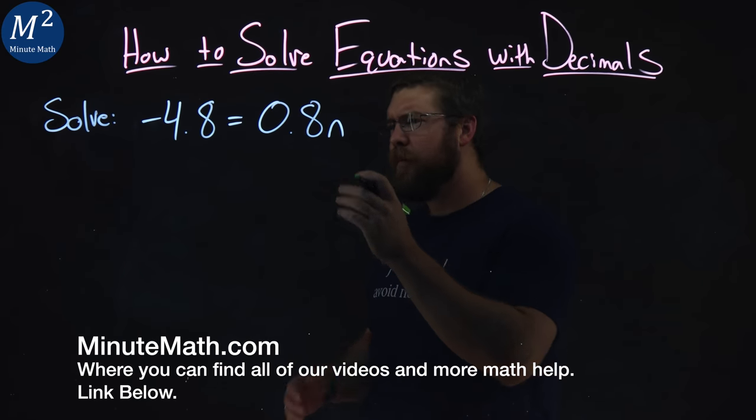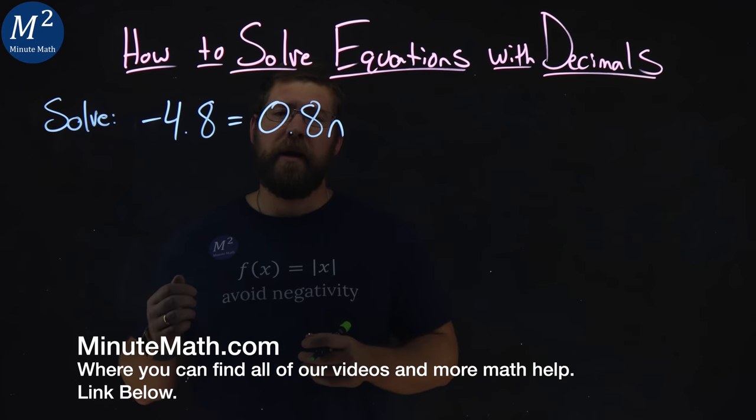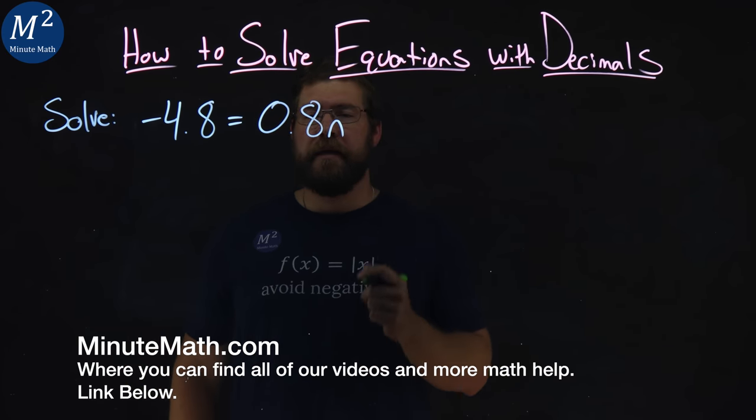We're given this problem right here. Solve: negative 4.8 equals 0.8n.